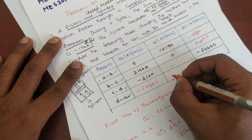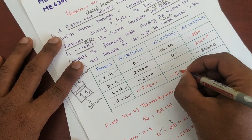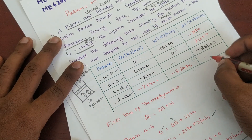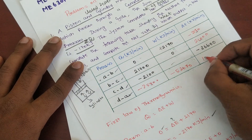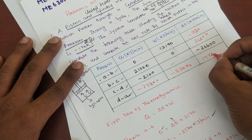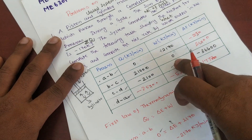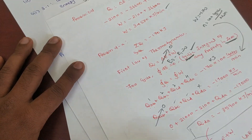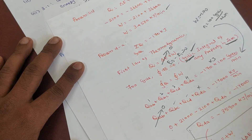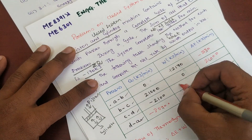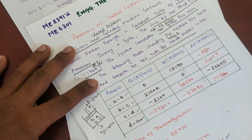So the final answer: W_net is 17000 kilojoules per minute. Q_DA is equal to minus 53670 kilojoules per minute, and ΔU_DA is equal to 17000 kilojoules per minute. This completes the table and the net rate of work output.